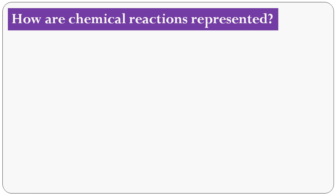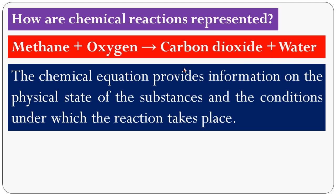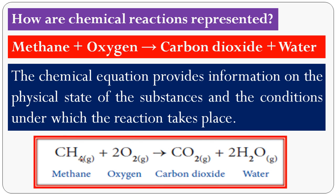How are chemical reactions represented? When methane reacts with oxygen to form carbon dioxide and water — this is a word equation. The chemical equation provides information on the physical state of the substances. For example, solid is represented as S, liquid as L, gaseous as G, aqueous solution as AQ, and the conditions under which the reaction takes place. The chemical equation is: CH₄ (methane) reacts with O₂ to form CO₂ and H₂O. That is a chemical equation.